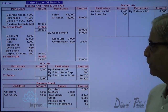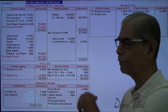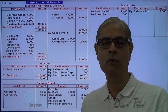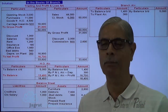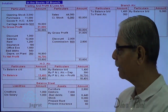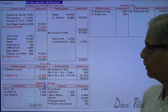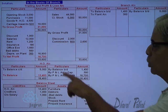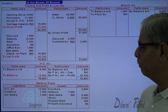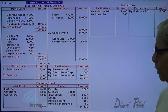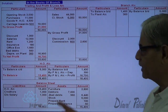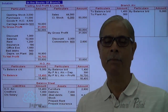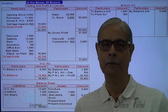The closing balance of the HO account (capital account in branch books) is calculated, and this capital appears on the liability side of the balance sheet. The total of assets and liabilities should agree — this is how the balance sheet is prepared.